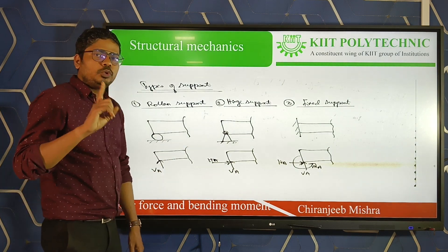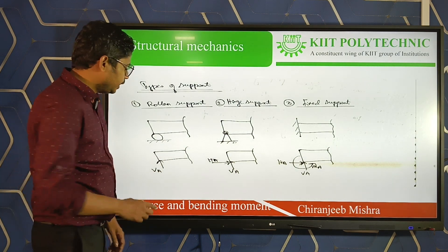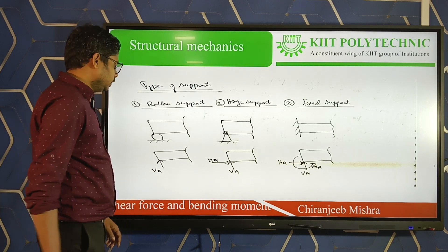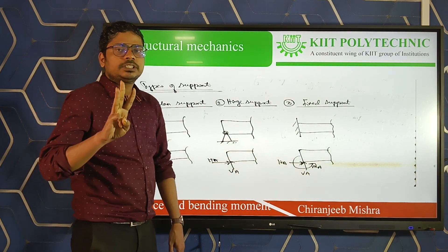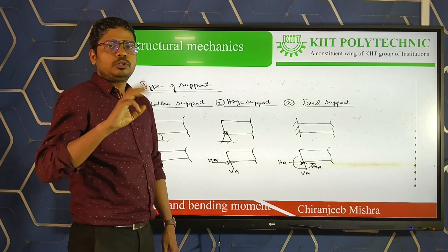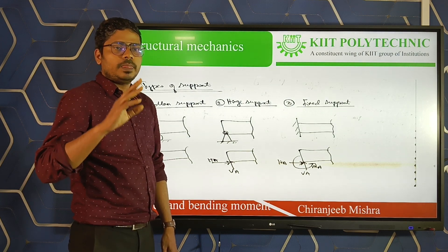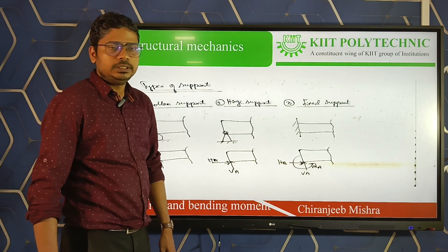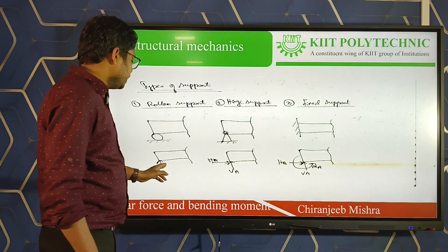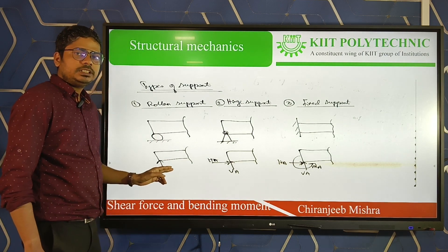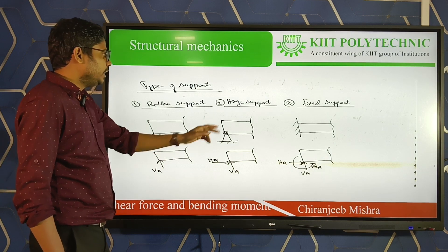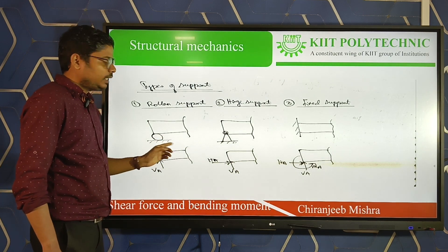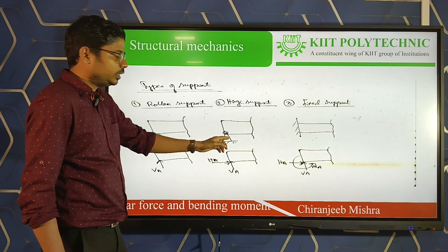Now we'll analyze what reactions are exhibited by these supports. For roller support, there is only one reaction — in the upward direction, denoted as VA, which is the normal direction upward reaction. Generally, there are three possible reactions in a 2D structure: vertical, horizontal, and moment. Roller support has only vertical reaction.